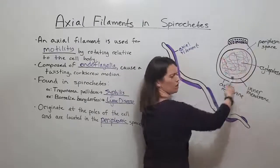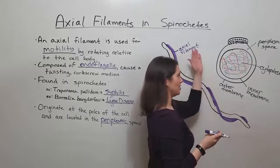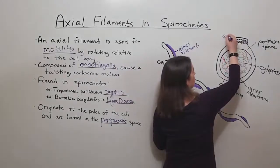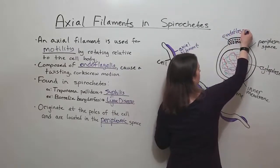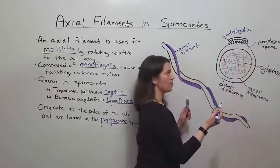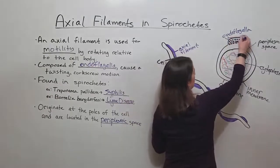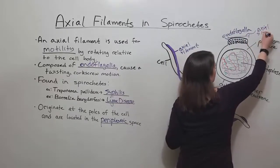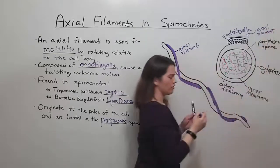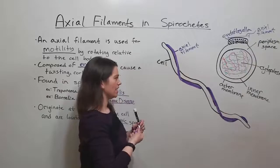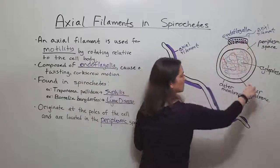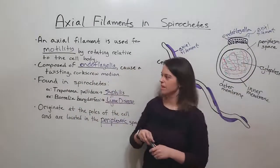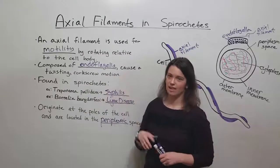We are looking at a cross section of the cell. Here are all of those endoflagella that make up the axial filament. So the axial filament is this portion right here — axial filaments made up of many endoflagella. They sort of twist around the cell to cause this twisting, corkscrew-like motion that we associate with the spirochetes that have these axial filaments.